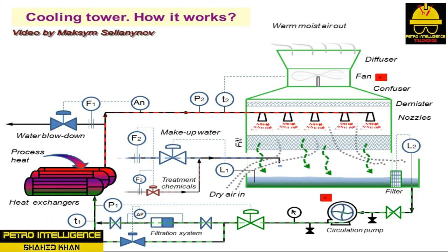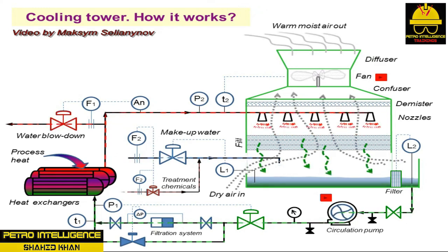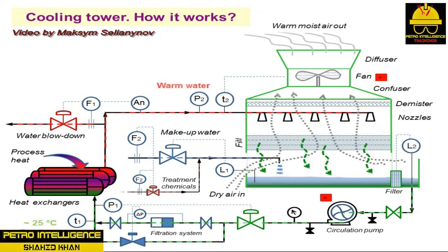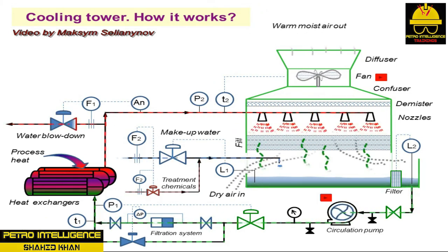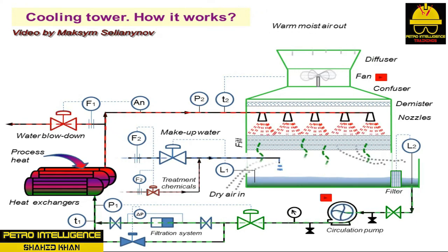The splash bars direct the downward flow of water and increase the surface area available for air-water contact. The material inside a tower that directs the flow of water and air is called the fill, which can be arranged in patterns that produce either counterflow or crossflow. Pumps suction water from the water basin and discharge it into the cooling water supply header, which distributes water to process exchangers where it absorbs heat and returns to the top of the cooling tower through the cooling water return header.